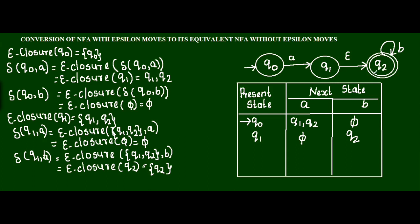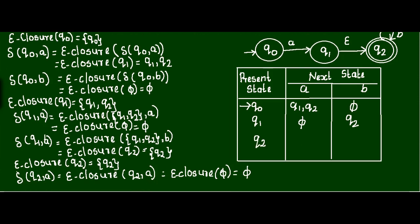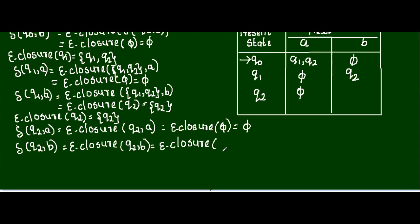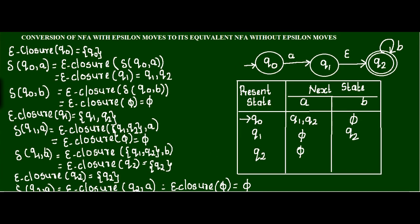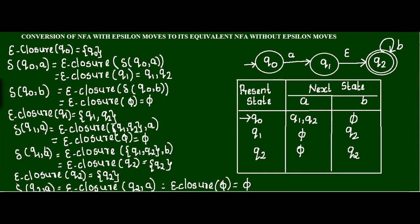Now I am going to find the null-closure of Q2. Q2, if input is null, there is no next state, so I write the same state again. Now finding the transition for Q2: Q2, if input is A, there is no next state, so it is null-closure of MT. Q2, if input is B, the next state is Q2, so it is null-closure of Q2. Already I found null-closure of Q2 is just Q2. So in the table: Q2, if input is A, next state is MT; if input is B, next state is Q2.